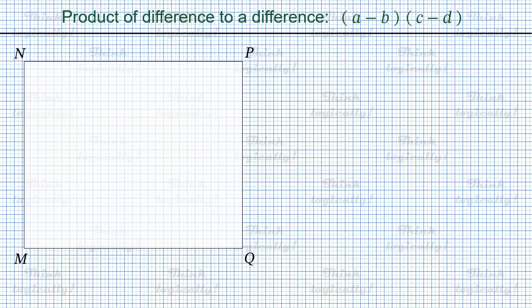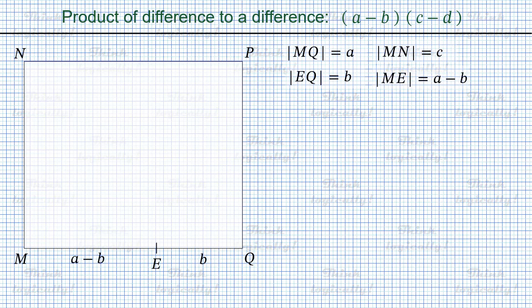Now let's move on to the product of a difference by a difference: a minus b times c minus d. Again, we take rectangle MNPQ; however, this time the length of MQ equals just a, and the length of MN equals just c. On side MQ, this time from point Q, we draw segment EQ with length b, in which case the length of the remaining segment ME is a minus b. And again we draw segment EF parallel to sides MN and PQ, where point F belongs to side NP. Also, on side MN, we draw segment GN with length d, hence the remaining segment MG has length c minus d.